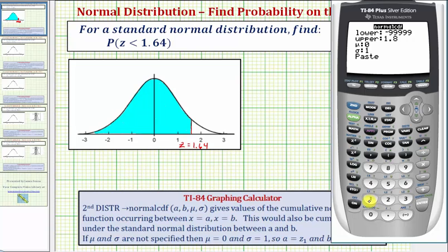The upper bound z-score is going to be 1.64. Now I'm saying z-scores because we are going to set mu equal to zero and sigma equal to one. If these weren't zero and one, then the upper and lower bounds would be data values.